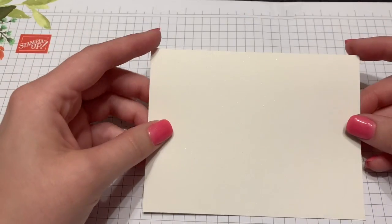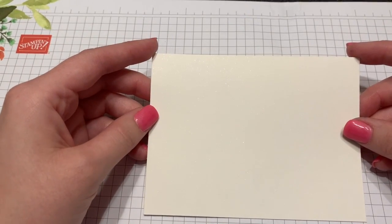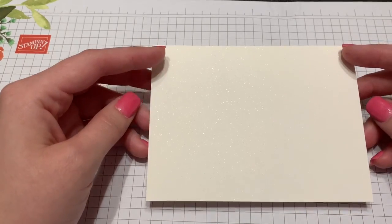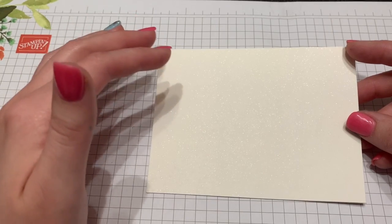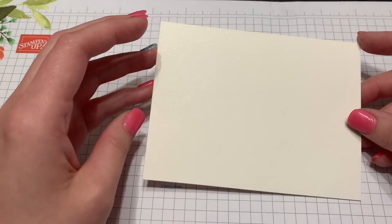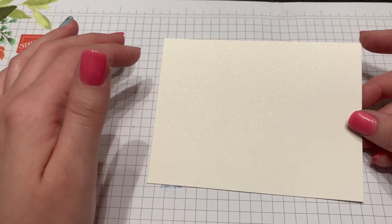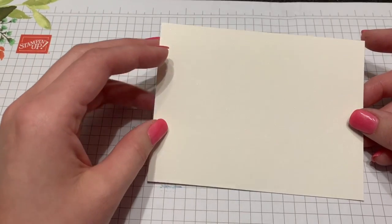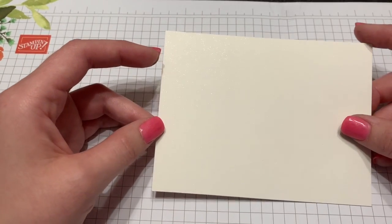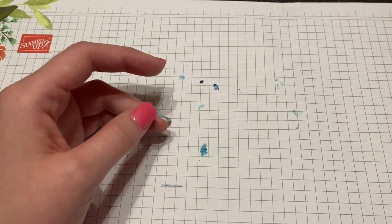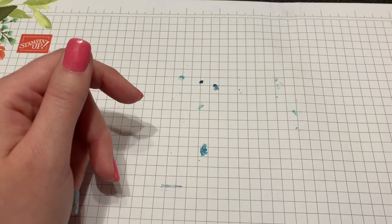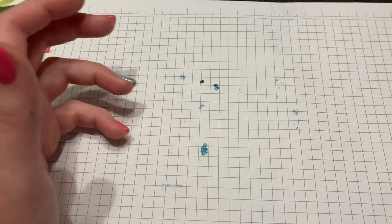The paper I'm using today is the shimmer white, cut down to three and three quarters by five. I like the shimmer white for doing anything with a lot of color or water because it doesn't wrinkle up and doesn't seep through as fast as regular white. You can also use watercolor paper, which I'll show you because it's a little bit different. Different papers soak up the liquid differently.